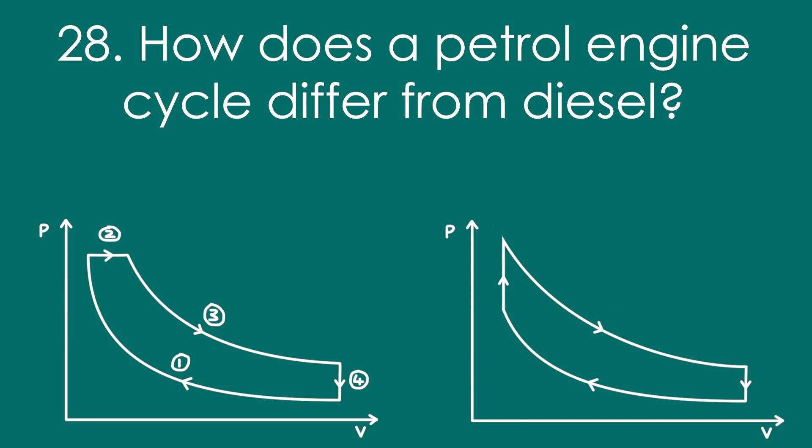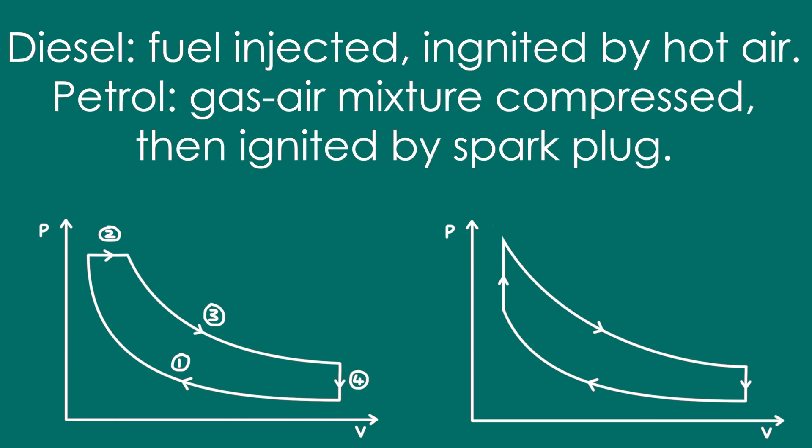Question 28: How does a petrol engine cycle differ from a diesel engine cycle? With diesel, fuel is injected and ignited by the hot air. With a petrol engine, a gas-air mixture is compressed and then ignited by a spark plug.